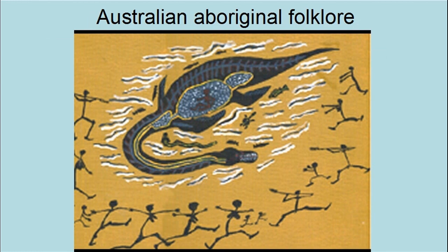Australian Aboriginal folklore has references to plesiosaur-like creatures. Elders of the Kuku-Yalanji Aboriginal tribe in far north Queensland, Australia, relate stories of Yerru, a creature which used to inhabit rainforest waterholes. This painting depicts a creature remarkably similar to a plesiosaur, showing an outline of the gastrointestinal tract, indicating that the animals were hunted and butchered.